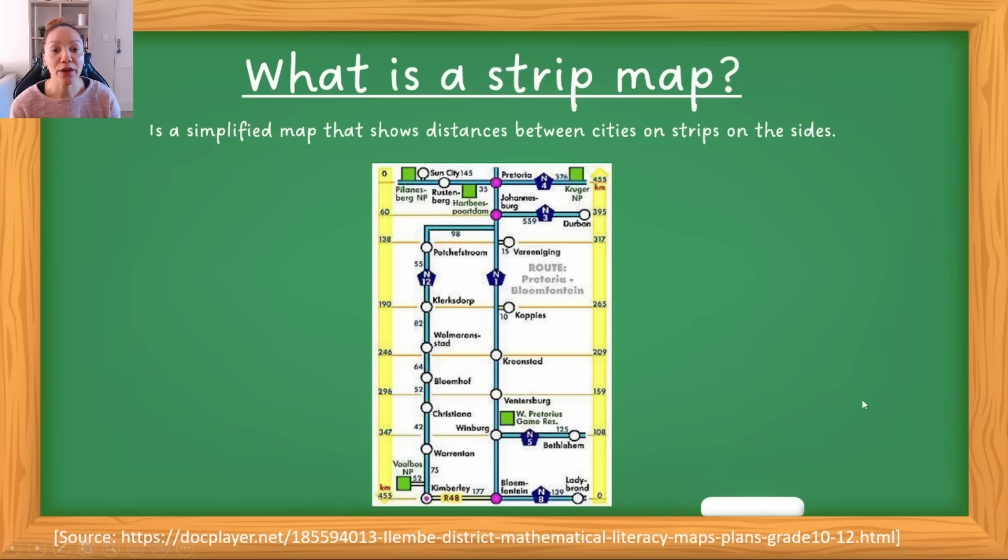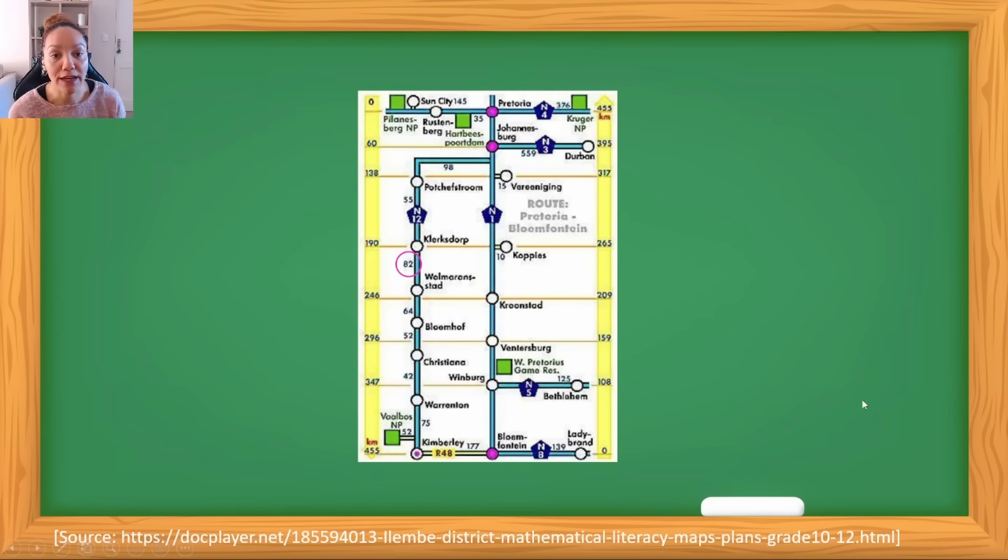Let's look at all the different aspects of a strip map. This strip map is a route between Pretoria and Bloemfontein. That means I will have Pretoria right at the top and Bloemfontein right at the bottom. These are the two big cities between which this strip map maps the distances.